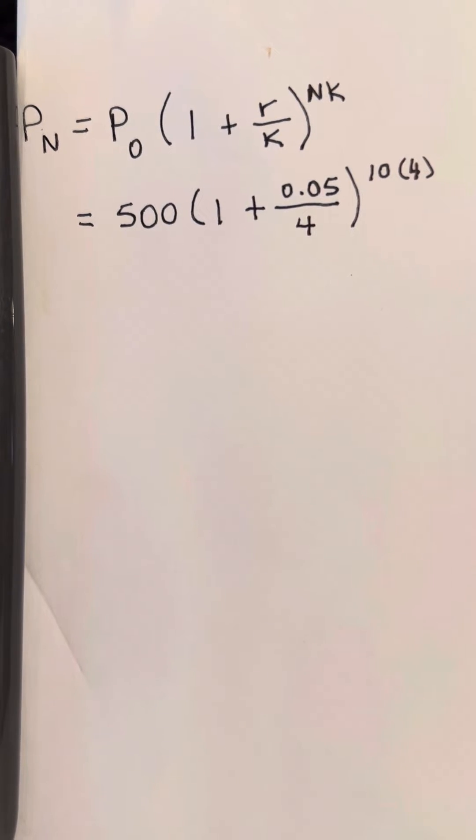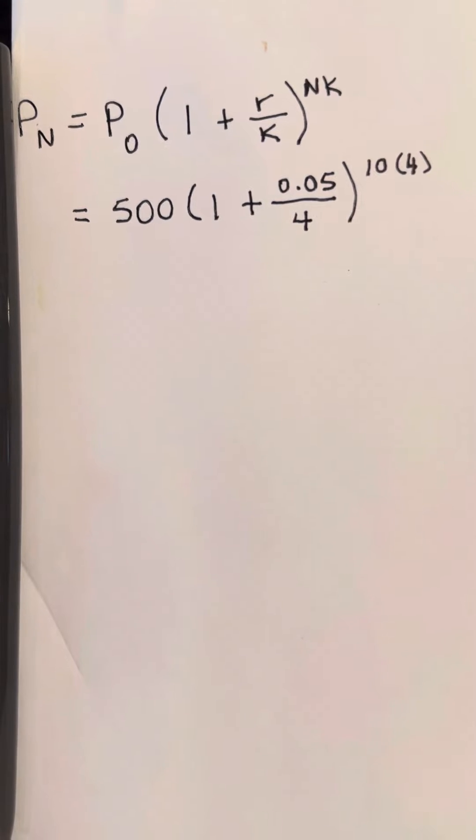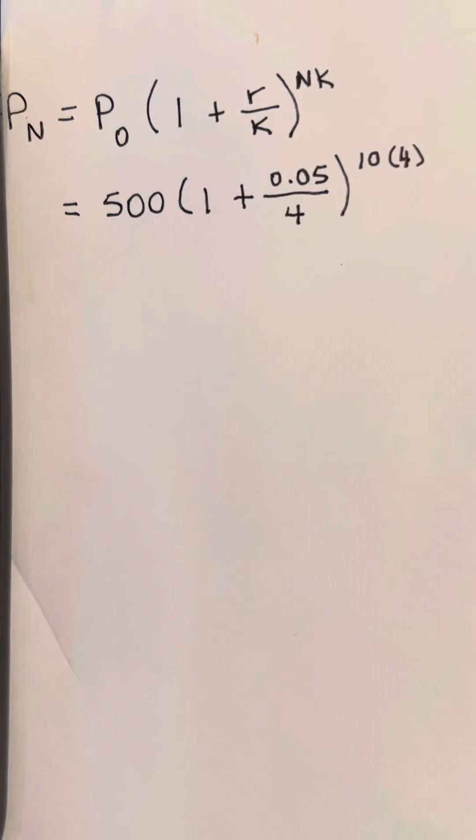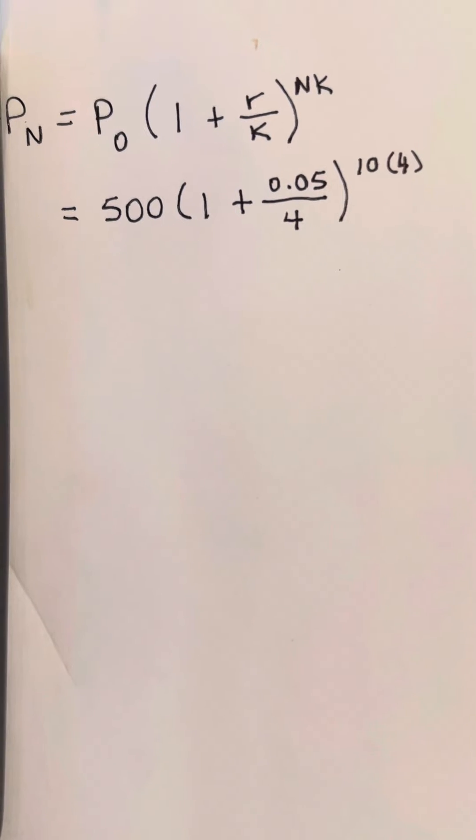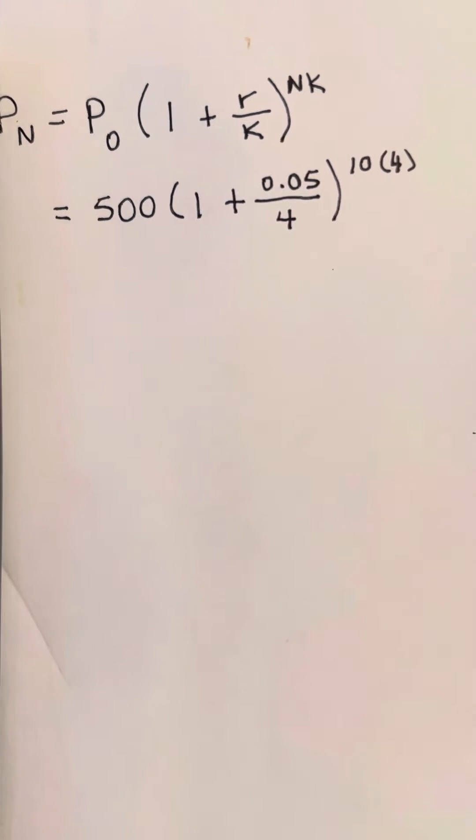We are going to be figuring the compound interest on $500 with an interest rate of 5% compounded quarterly over 10 years.